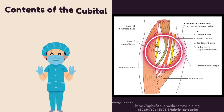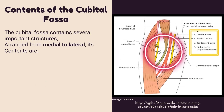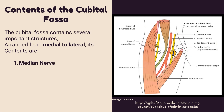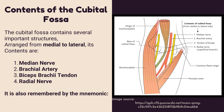The cubital fossa contains several important structures arranged from medial to lateral. Its contents are: median nerve, brachial artery, biceps brachii tendon, and radial nerve. This is also remembered by the mnemonic MBBR.